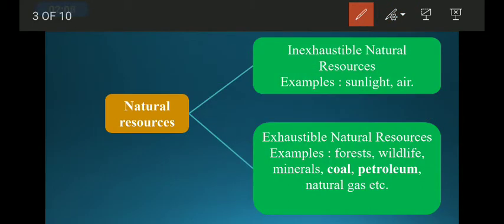Then we have exhaustible natural resources like forests, wildlife, minerals, coal, petroleum, and natural gas. In this chapter we are going to study coal and petroleum, which are exhaustible natural resources. This means they can be finished if we use them recklessly.